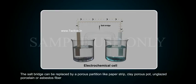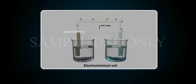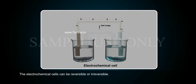The salt bridge can be replaced by a porous partition like a paper strip, clay porous pot, unglazed porcelain, or asbestos fibre. The electrochemical cells can be reversible or irreversible.